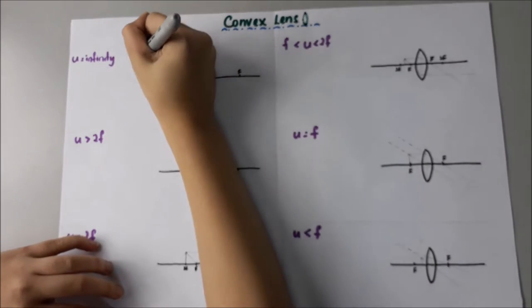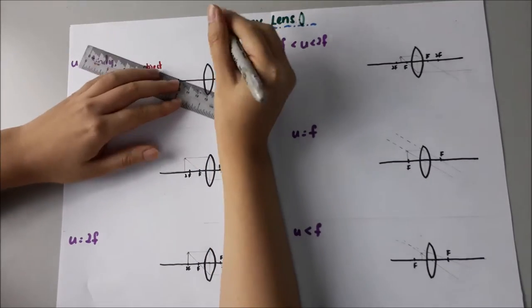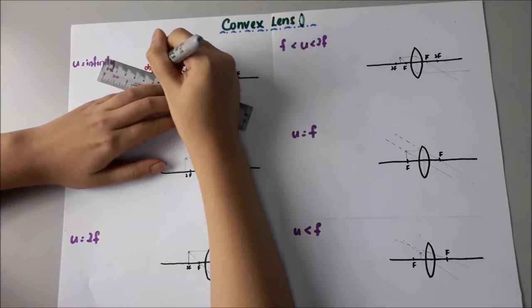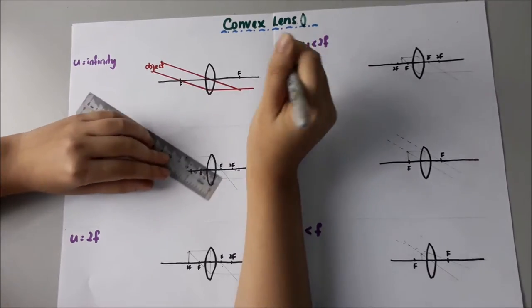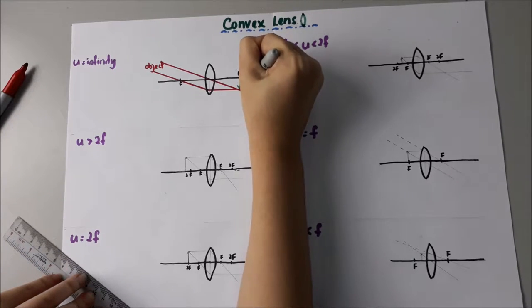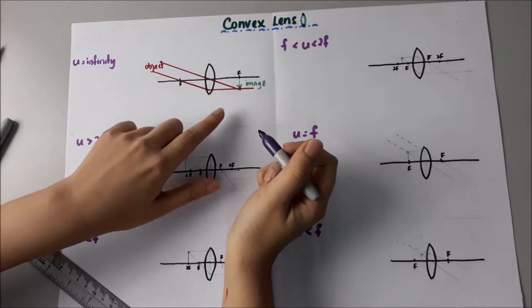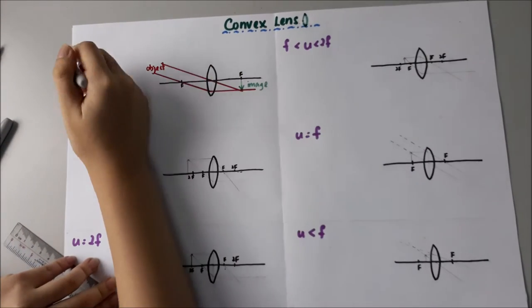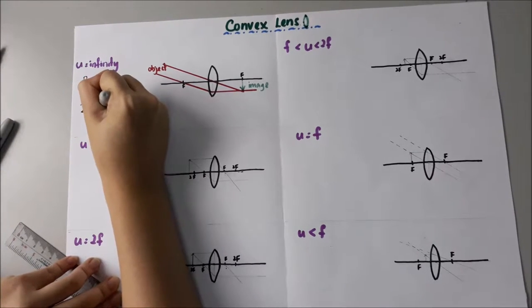When the object is at infinity, the lines have to be... This is the image. We can see that the image is real, inverted, and diminished in size.